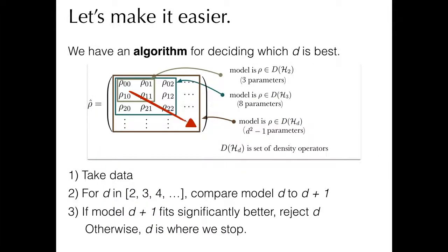The algorithm roughly runs like this: take some data, do some experiments, and then iterate through Hilbert space, comparing the model with d dimensions to a model with d plus one dimensions. If you find that the larger model fits significantly better, then use that model. Otherwise, stay with the model that you currently have.